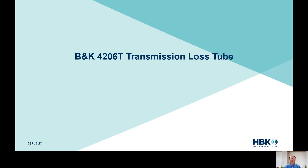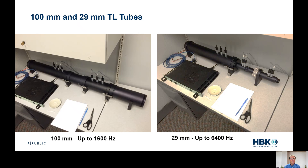I'm going to give a little background about the transmission loss tube. On the left you see the normal BNK 4206T impedance tube with four microphones — two on the source side and two on the received side — with a straight measurement section in between. To do high-frequency measurements using the 29-millimeter tube, there's an attachment that attaches onto the source, and this section of pipe is 29 millimeters ID with four microphones in the measurement section.